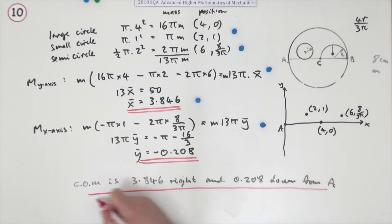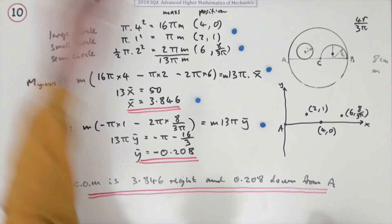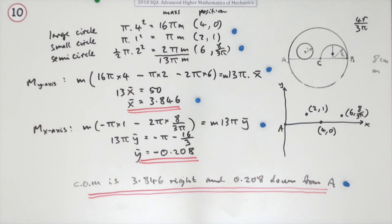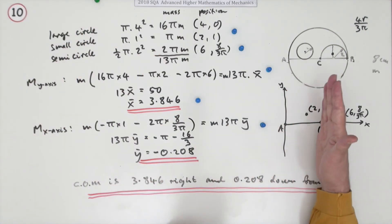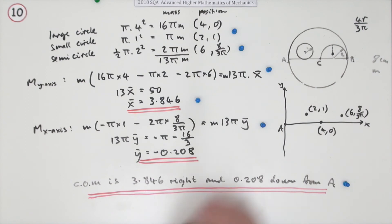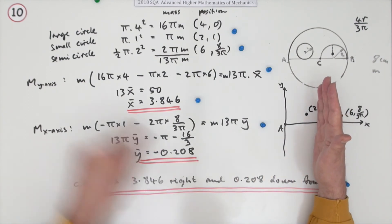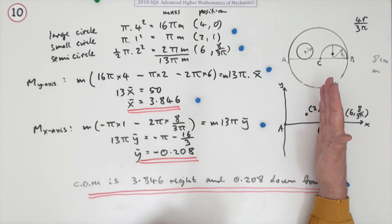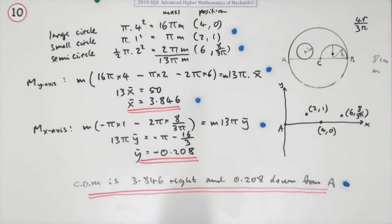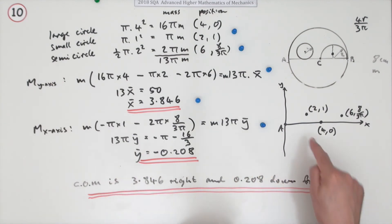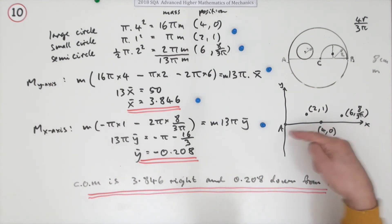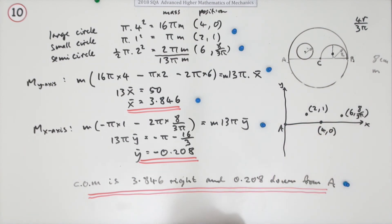If you had taken moments about C instead, you'd have removed one calculation in the x-direction, but at the end you'd have had to translate the distance back to A. So there's not much to be gained — it was only one small calculation.